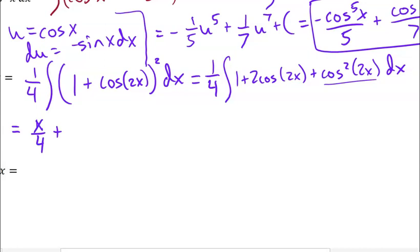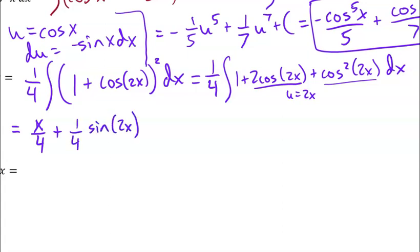So one-fourth times the integral of 1 with respect to x is going to be x over 4. And then plus, I've got this one-fourth — now I do have a composition in here, so u is 2x, du is 2dx, which is what I have — so my integral of cosine u would be sine u. And don't forget the one-fourth in front, so one-fourth times sine of 2x. Plus, I still have a one-fourth on this third part — you can think of it as splitting these into separate integrals, as long as you apply that one-fourth to all of them.